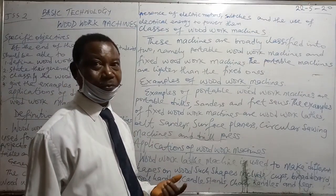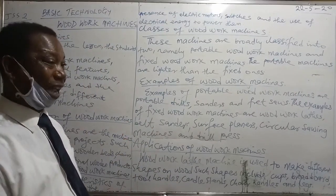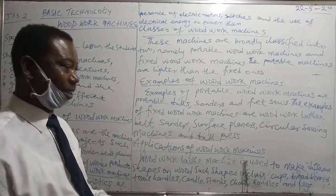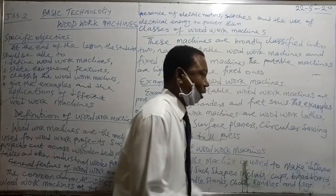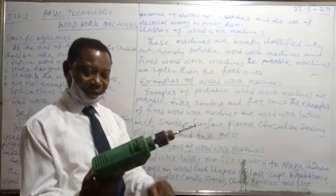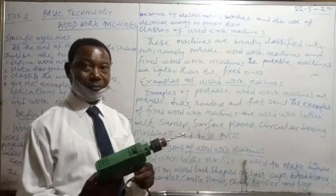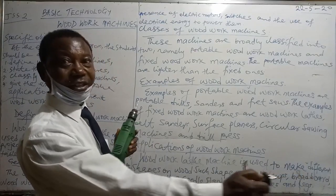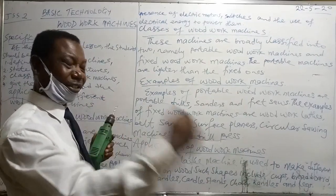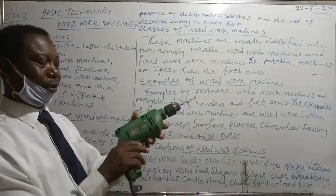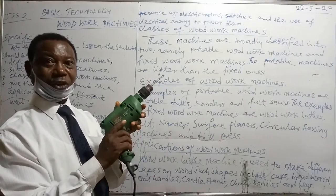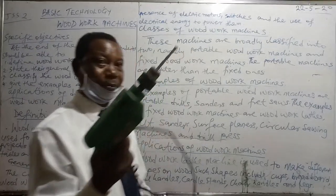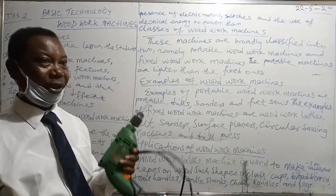Before I proceed, I would like to take us back to the area of common characteristics that cut across all the woodwork machines. For portable machines, as the one I have in my hand, I have this object — we call it the portable power drill. It has a plug for putting into the socket where it contacts electrical energy for powering it. We have something that resembles the nozzle or trigger of a gun — that is the switch. As I told you, they contain switches. I have just one example for the portable woodwork machines.